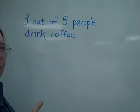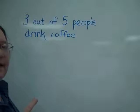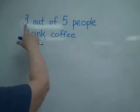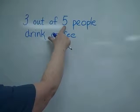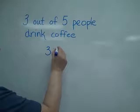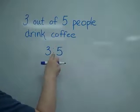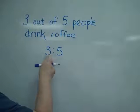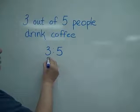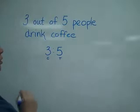However, a ratio is sometimes a little special. It doesn't have to be compared to the total. The 3 out of 5 is a ratio of 3 to 5. And this is the coffee drinkers out of the total.